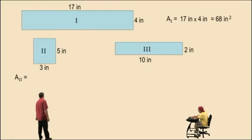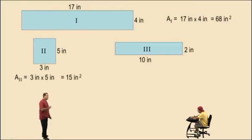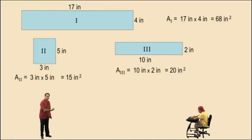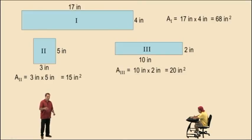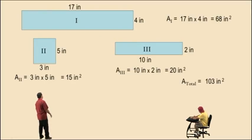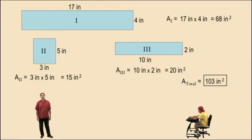Rectangle 2 is 3 inches times 5 inches, which is 15 inches squared. And rectangle 3 is 10 inches times 2 inches, which is 20 inches squared. Remember, area is length times width — you're multiplying here. When you found perimeter, you summed up all the side lengths, you added them up. But for area, you have to break it up into rectangles and take length times width. So the total area is adding up all three areas: 15 inches squared plus 20 inches squared plus 68 inches squared, and that gives you 103 inches squared.